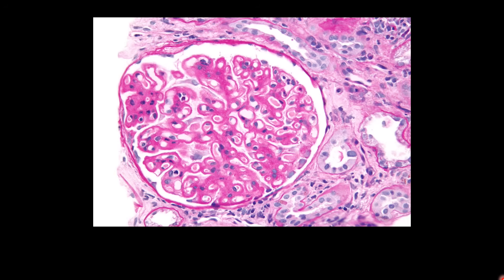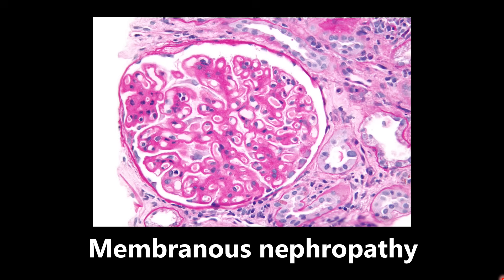This picture is a glomerulus showing membranous nephropathy on H&E stain. The notable finding is this thick outer basement membrane. So if you see a basement membrane that is thick like this, you want to be thinking about membranous nephropathy.